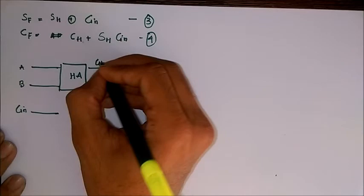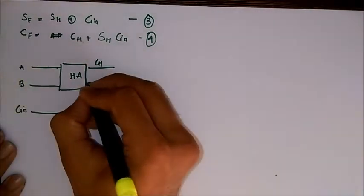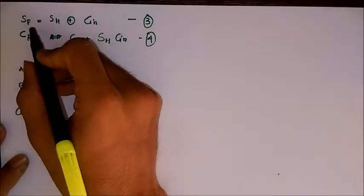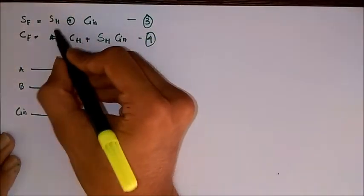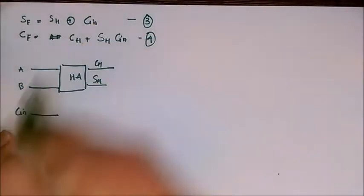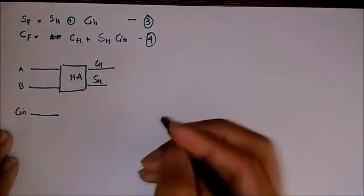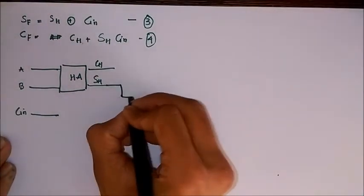This block diagram, this block represents a half adder. So here there will be two outputs, that is carry and sum SH. Now the sum of full adder is SH XOR Cin, which is the sum when SH and Cin is given as inputs to a half adder.